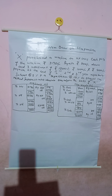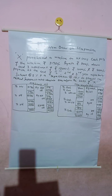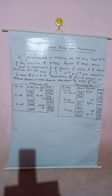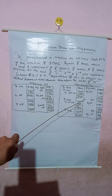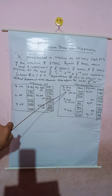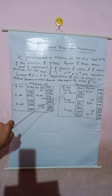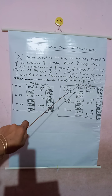The next important ledger account is the hire vendor account. The hire vendor account is credited by machinery Rs. 31,960 at the start. Then the down payment to cash is Rs. 8,000. Then the next installment — the first installment amount is Rs. 12,000, to cash Rs. 12,000.